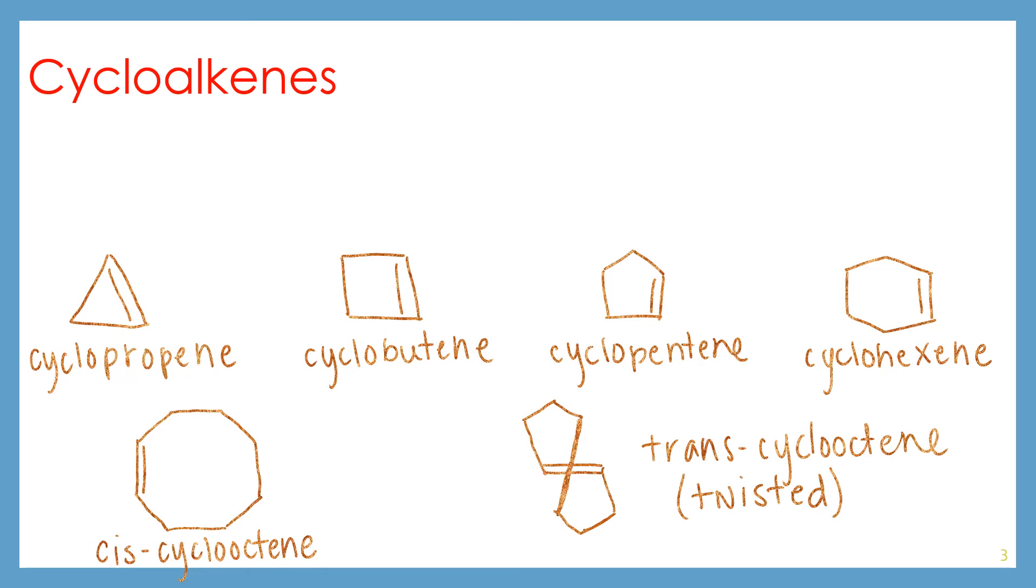Now, when it comes to our cycloalkenes, typically it's safe to assume that a cycloalkene is going to be cis. That's just because, take a look at cyclopropene.